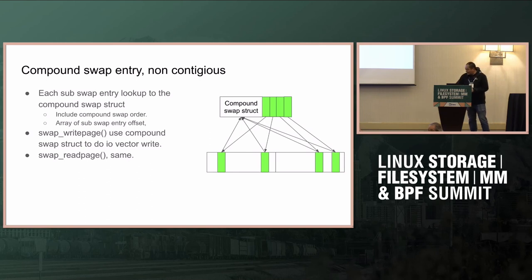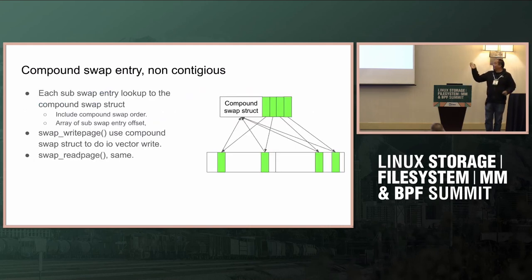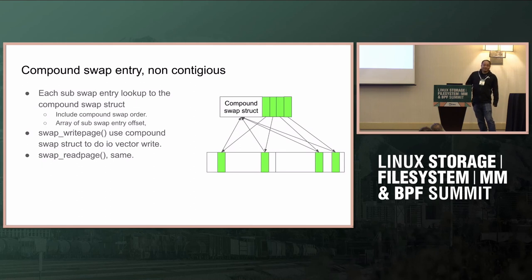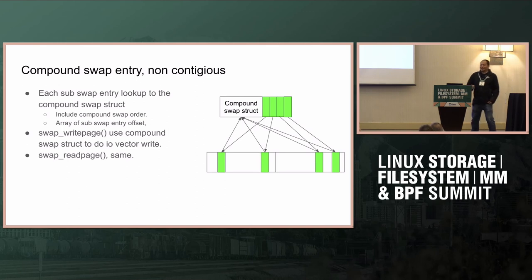This is the simple way I designed it — using a compound swap structure with an array to track sub-entries, so you can have the memory compression effect. When you reference them you just use one pointer, and that's it. No more follow-up questions. Thank you.